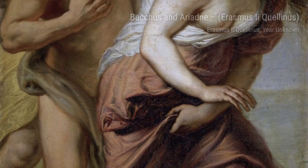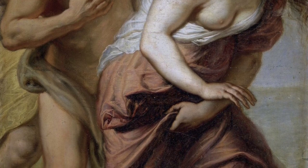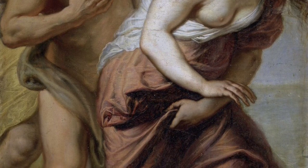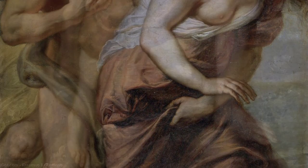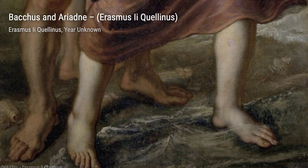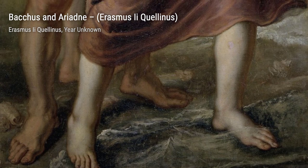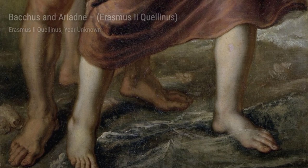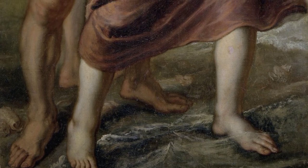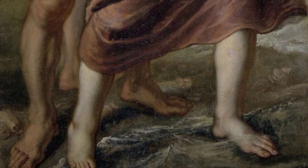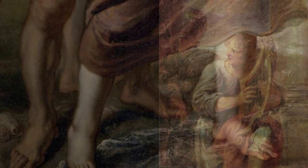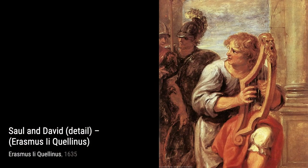In Saul and David, Quellinus focuses on the dramatic moment when David plays the harp to soothe the troubled King Saul, showcasing the power of music. Thetis Dips Achilles in the River Styx depicts the mythological scene of Thetis dipping her son Achilles in the river Styx to grant him invulnerability.